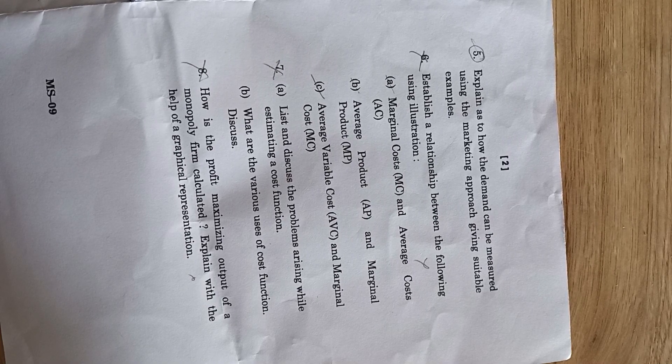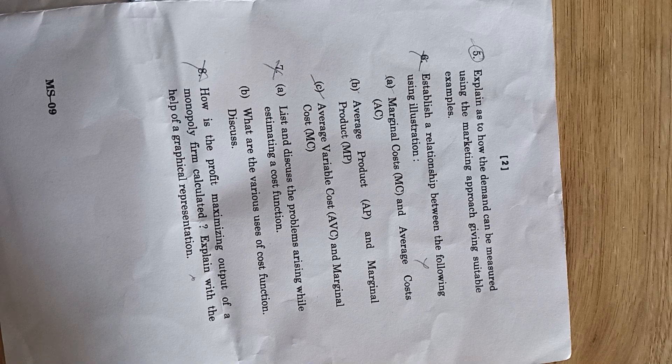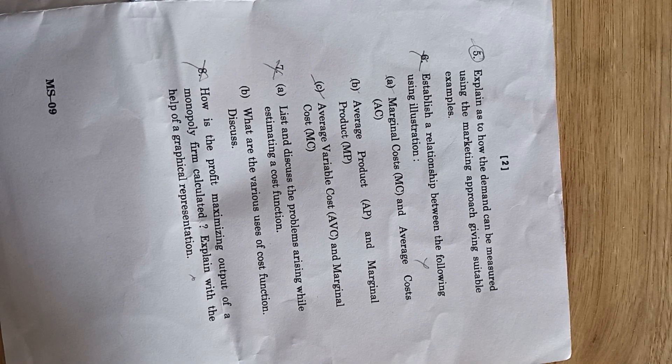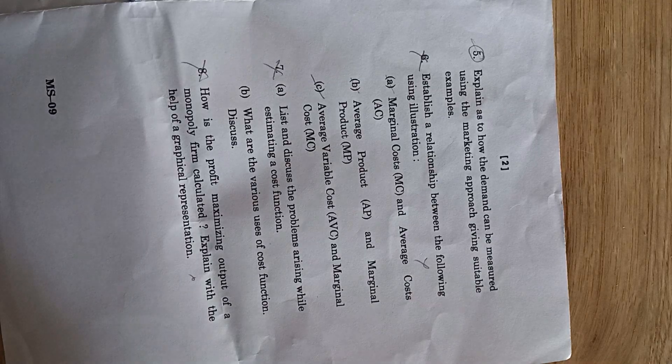The eighth question was: how is the profit maximization output of a monopoly firm calculated? Explain it with the help of a graphical representation.